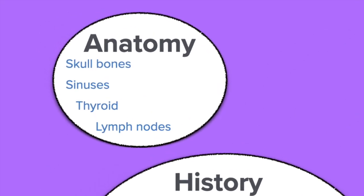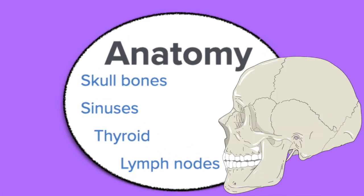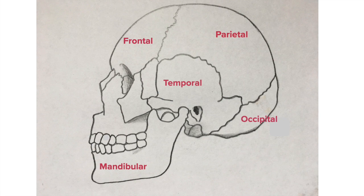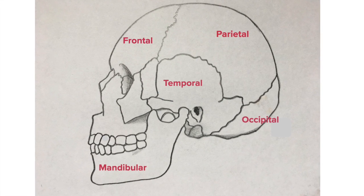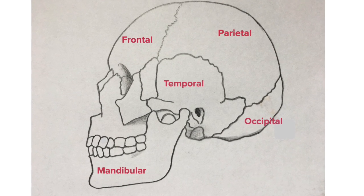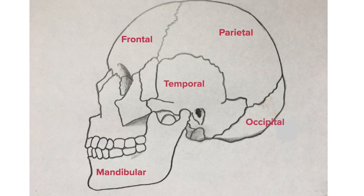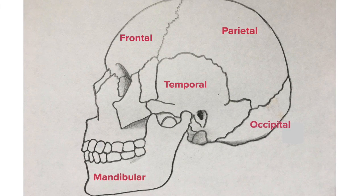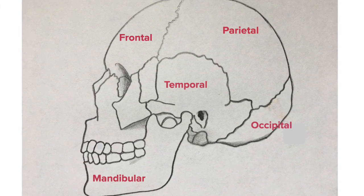When you have findings on the head, the scalp, underneath the hair, as well as the face, you need to be able to refer to the skeletal bones underneath so that you can document exactly at which landmarks those findings occurred. Make sure you know these terms and what portions of the head they refer to.